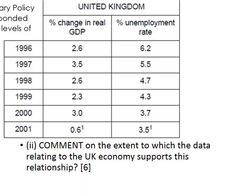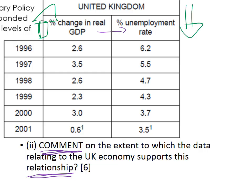Another trend question — and this is one type of comment question — is to comment on what the data shows, sometimes in terms of relationships. Here is a relationship between real GDP and unemployment. The likely relationship is that as real GDP increases, unemployment decreases and vice versa. Here we've got economic growth increasing and the level of unemployment falling. Even though it slows in 2001, there is still a further fall. So overall, we have a trend and the data does support that trend overall.